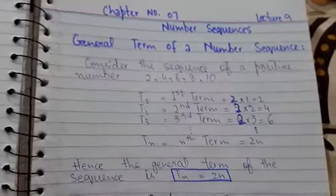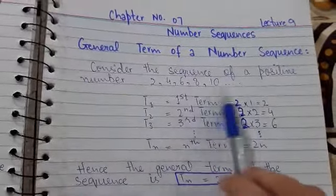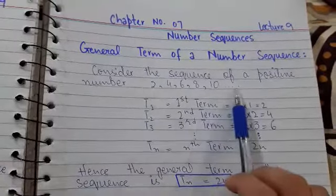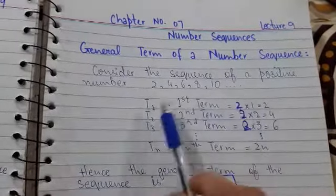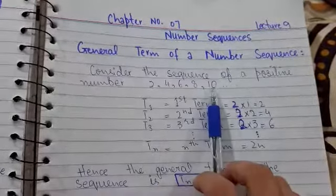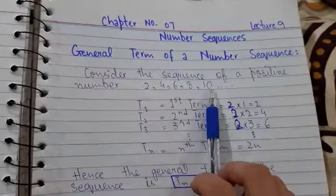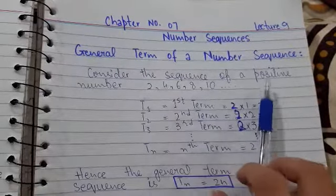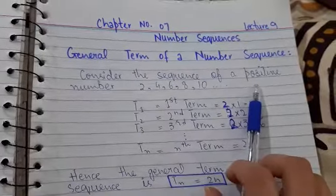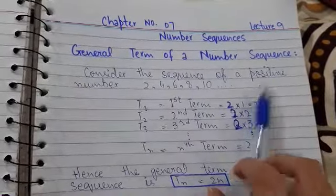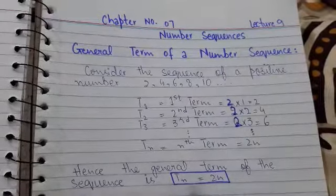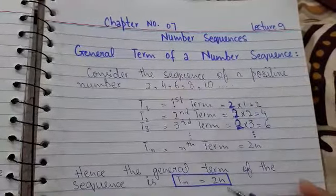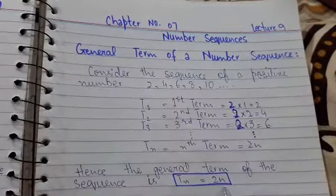We have a sequence here: 2, 4, 6, 8, 10, and so on. As you know, we are dealing with infinite sequences and we have only 5 elements of the sequence here. But what if we have to find out the 100th term of the sequence? For our ease and to save time, we find out a general formula — by inserting 100 into this formula we will find out that value.